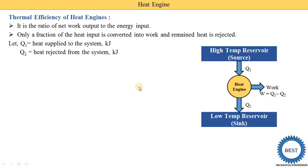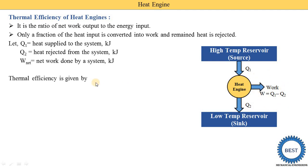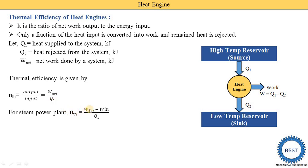Thermal efficiency is given by: η_thermal = output / input = W_net / Q1. In a heat engine there are multiple components — for example, the turbine produces work and the pump consumes work, so we use W_net. For a steam power plant, thermal efficiency = (W_out − W_in) / Q1. We know that heat is a low-grade energy and cannot be completely converted into work, so only a fraction of heat input is converted into work and the remaining heat is rejected.